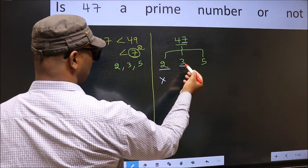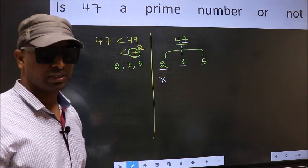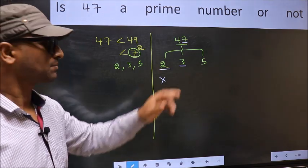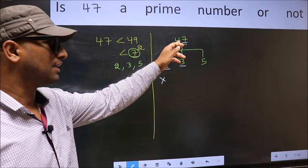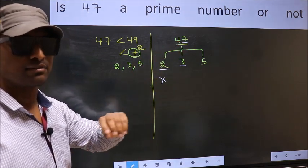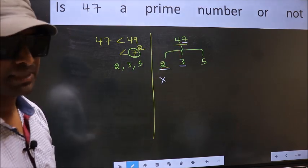Next prime number, 3. To check divisibility by 3, for that, we should add the digits. What I mean is, 4 plus 7, we get 11 and 11 is not divisible by 3. So, this number also not divisible by 3.